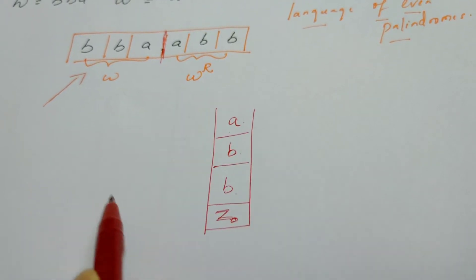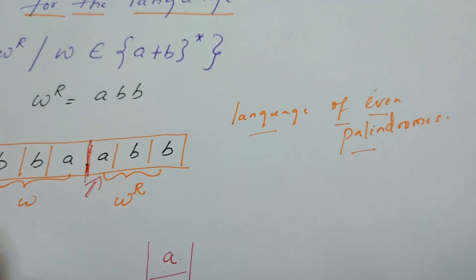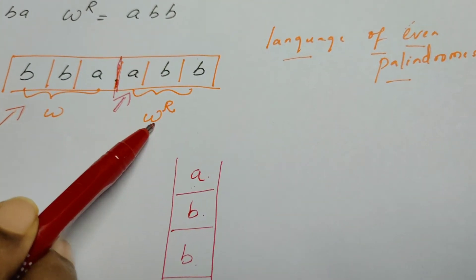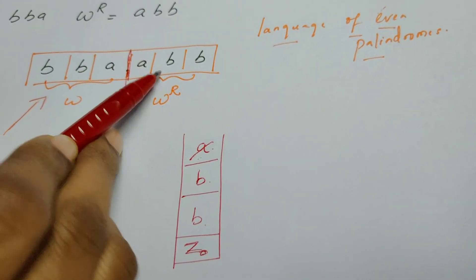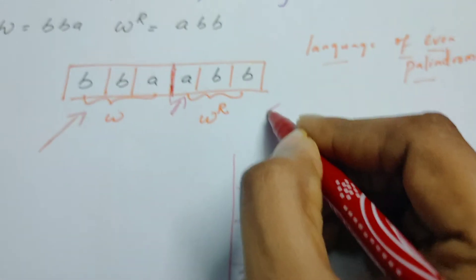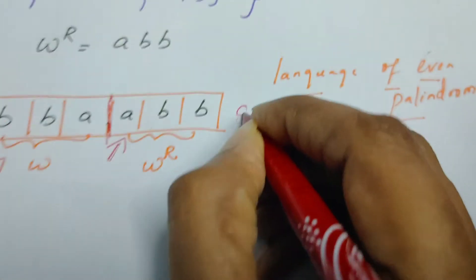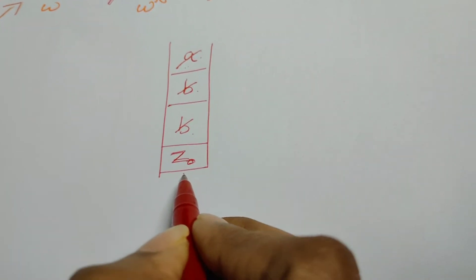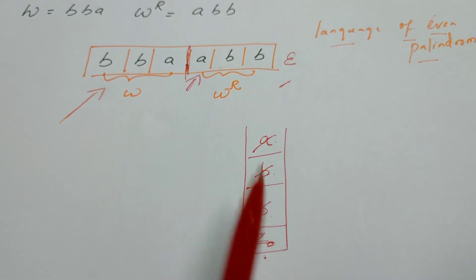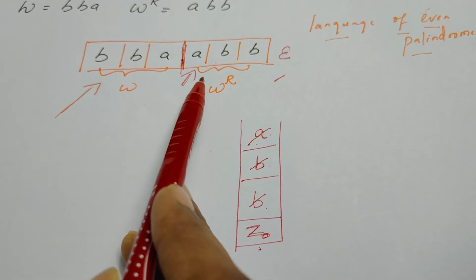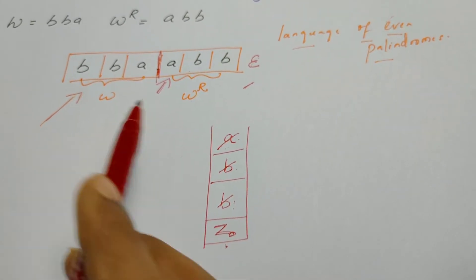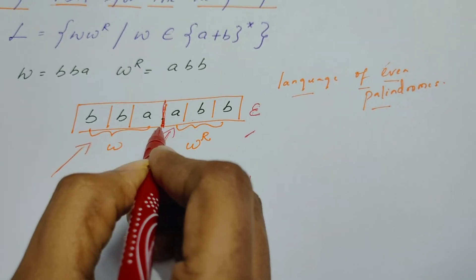The read/write head continues to read the second half of the string. When reading W^R, the top of the stack is checked: if it reads A in W^R and A is at the top of the stack, pop; if it reads B and B is at the top, pop. After reading the entire string, the stack should also be empty. The logic is: push the first half onto the stack, then match the second half against what was pushed. The challenge for the PDA is determining the midpoint that divides W and W^R.